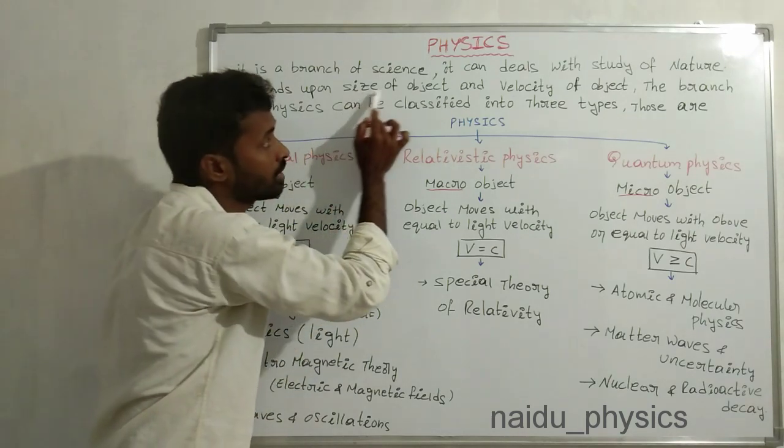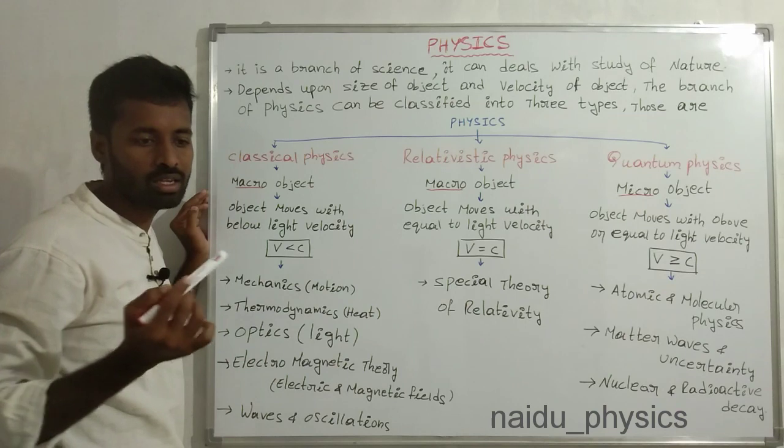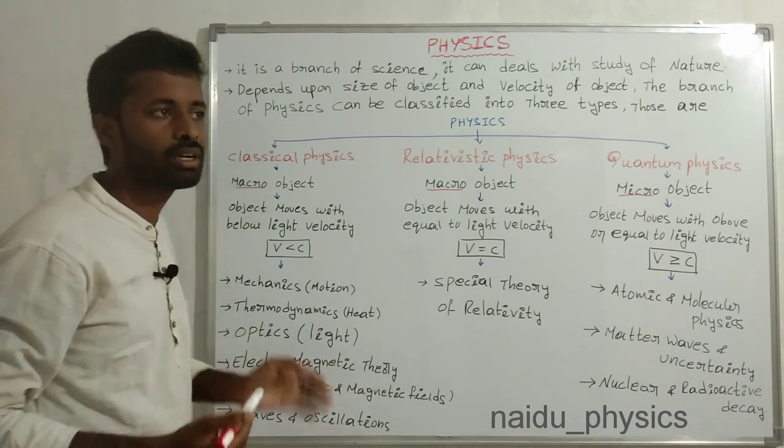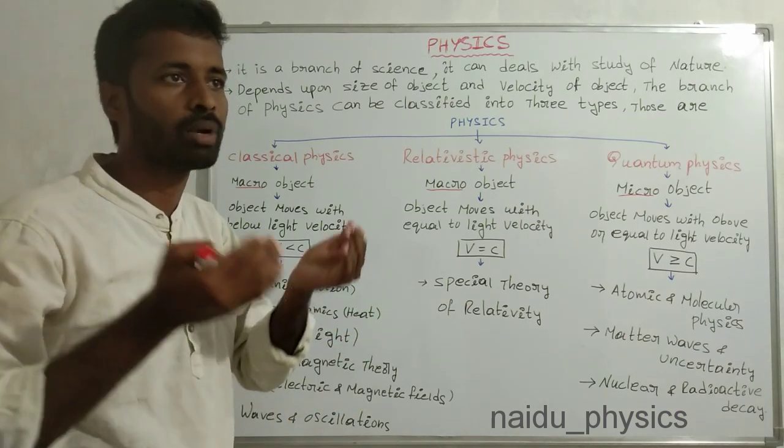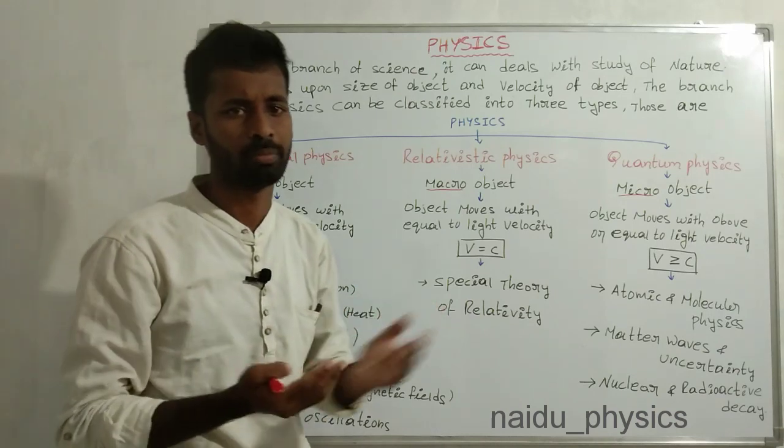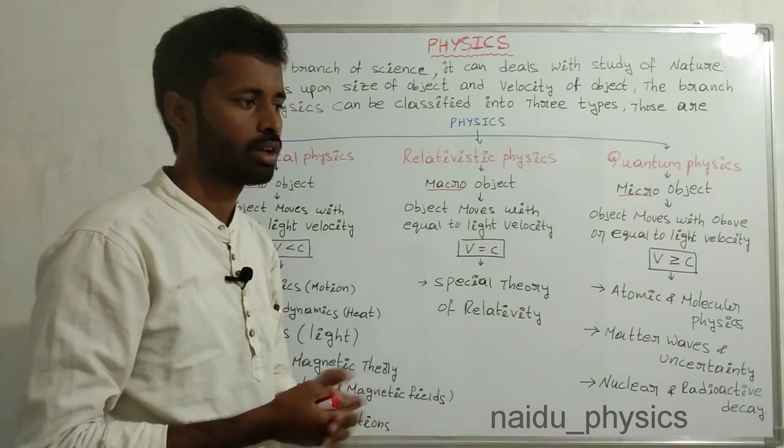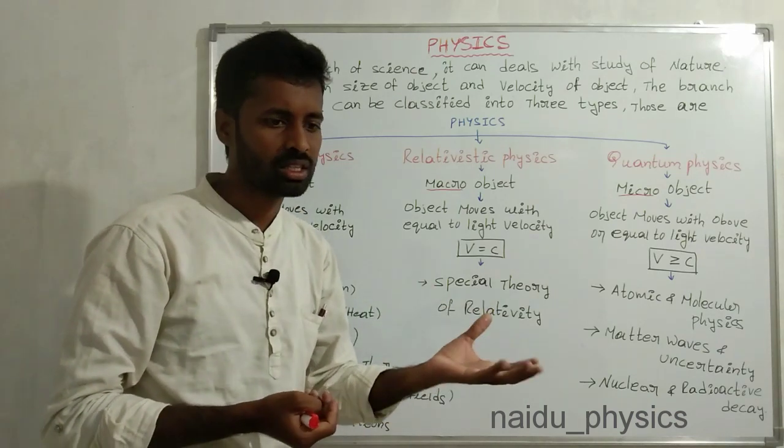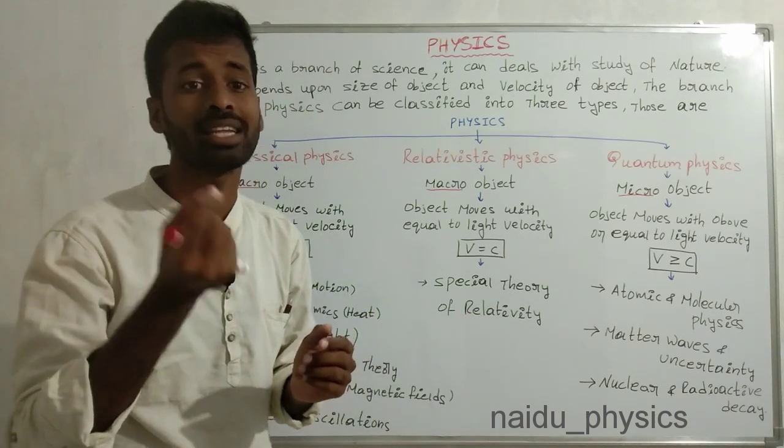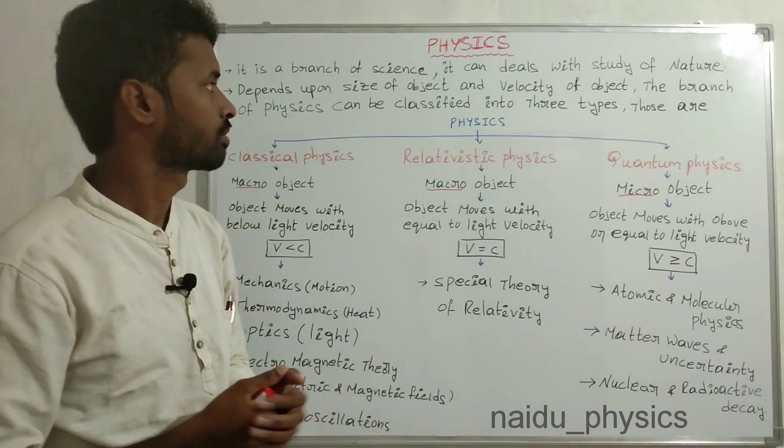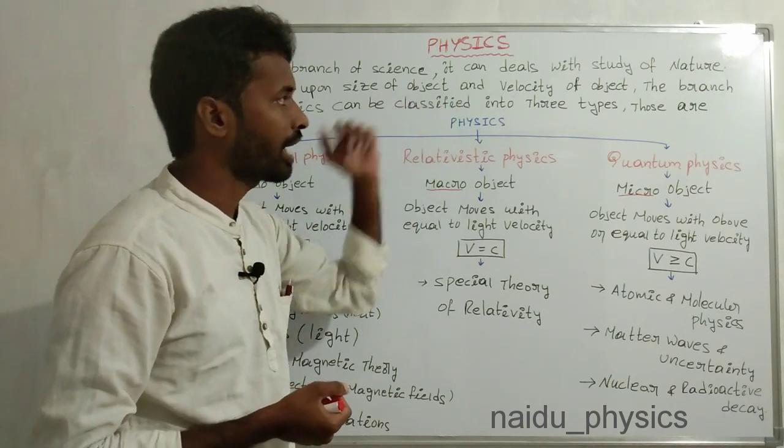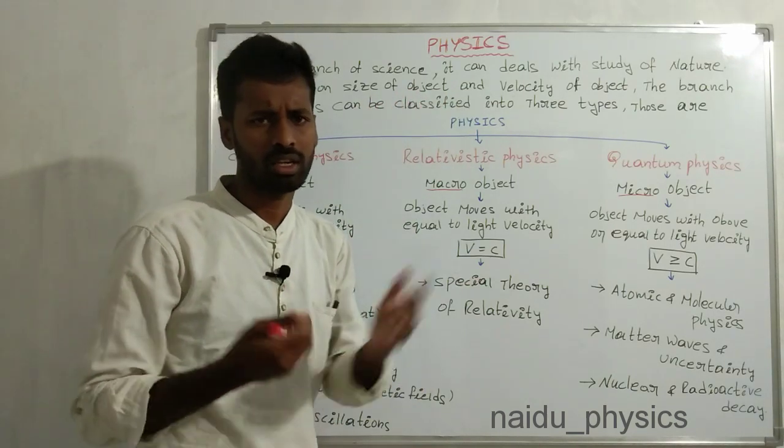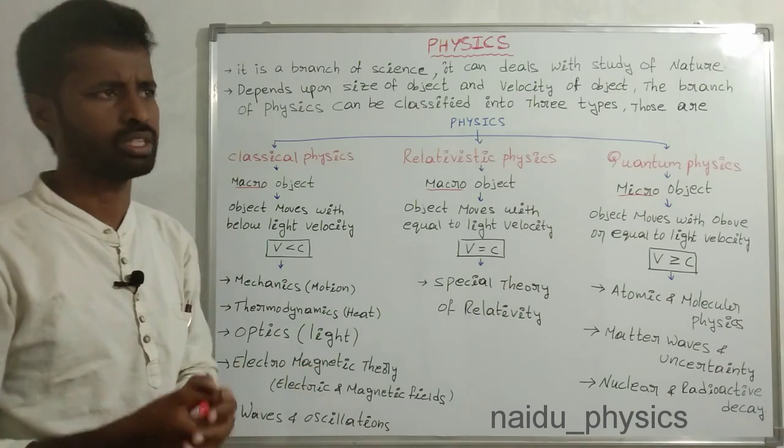Depends upon size of object - macro object or micro object. What is the difference between micro and macro? Micro is the order of 10 to the power of minus 6 meters. Macro is above that order - seeing objects.